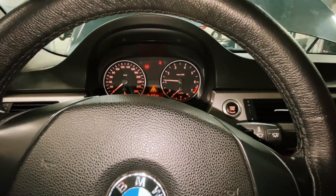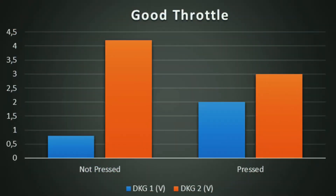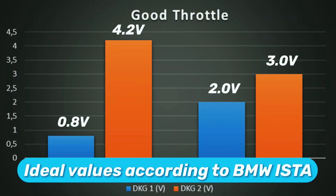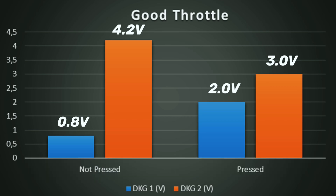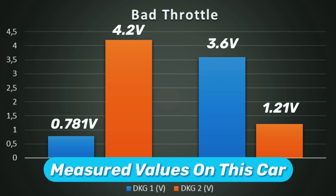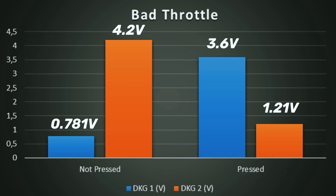Now let's look at a graph. This is something I did on Excel. This is according to BMW data what you should see. The left side is the throttle when it's not pressed; the right side is the throttle when it's fully pressed, as in the accelerator pedal in the vehicle. Those are the voltages you should see — you can pause and go back to double check them. Measured values on this car: the left side not so bad, however on the right side, miles out.